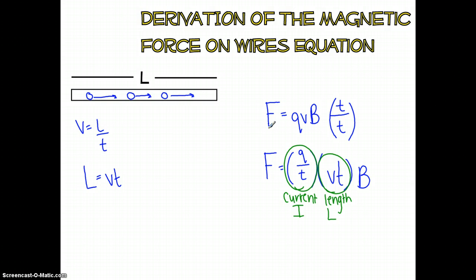What we can finally do here is we can rearrange those letters and do some substitutions, and it leads to our final equation for the force on a wire, which is F equals BIL. And that's how we develop our equation.